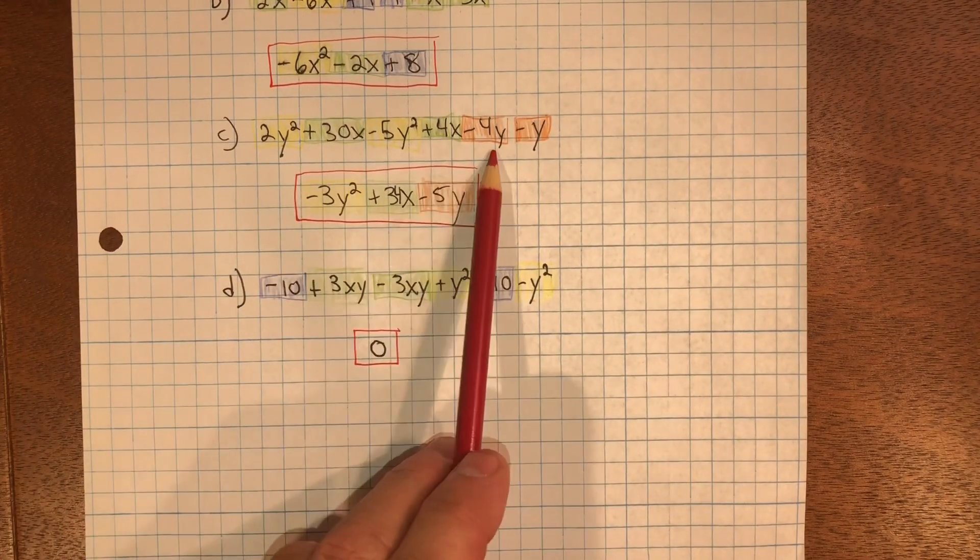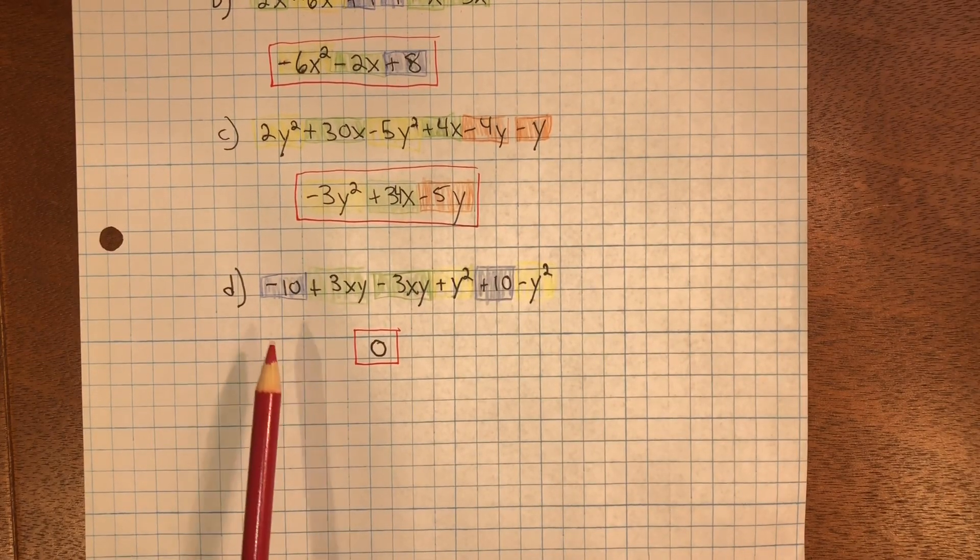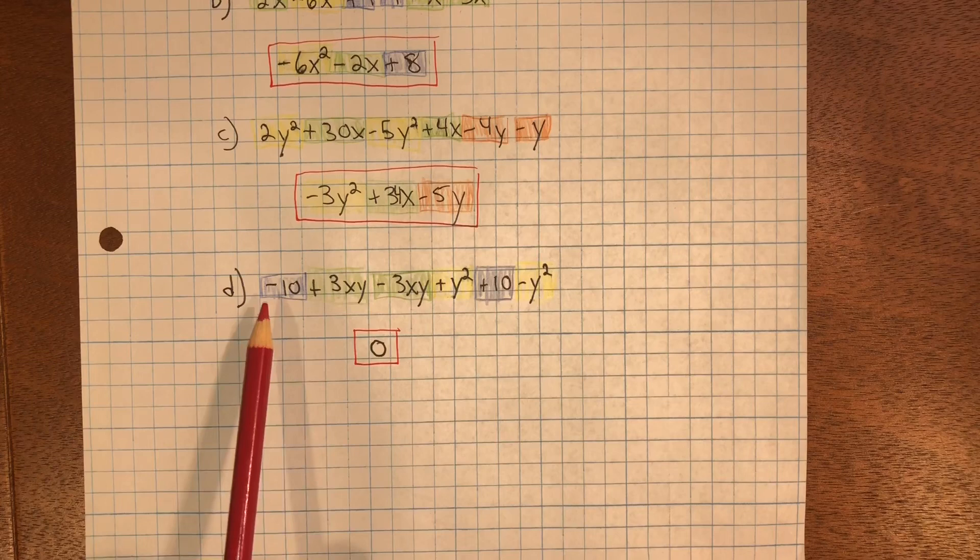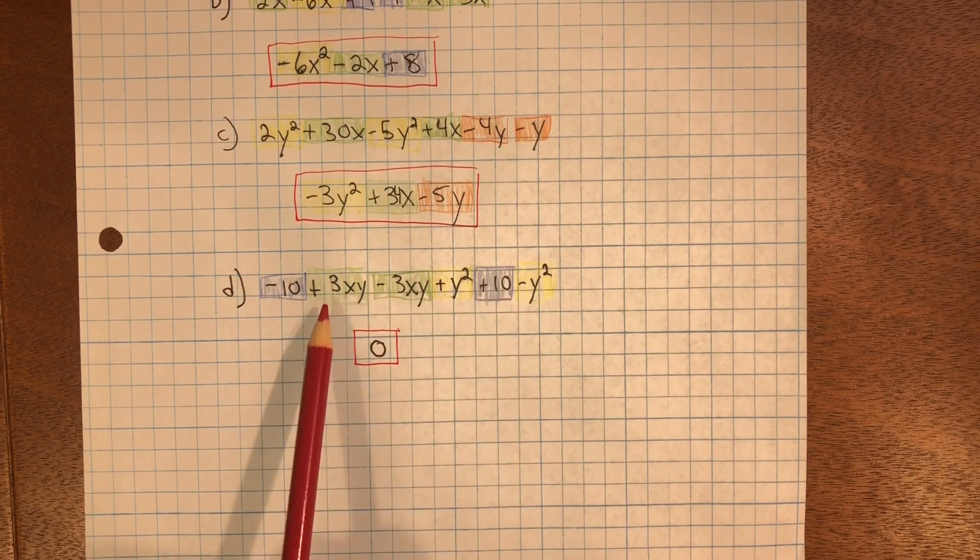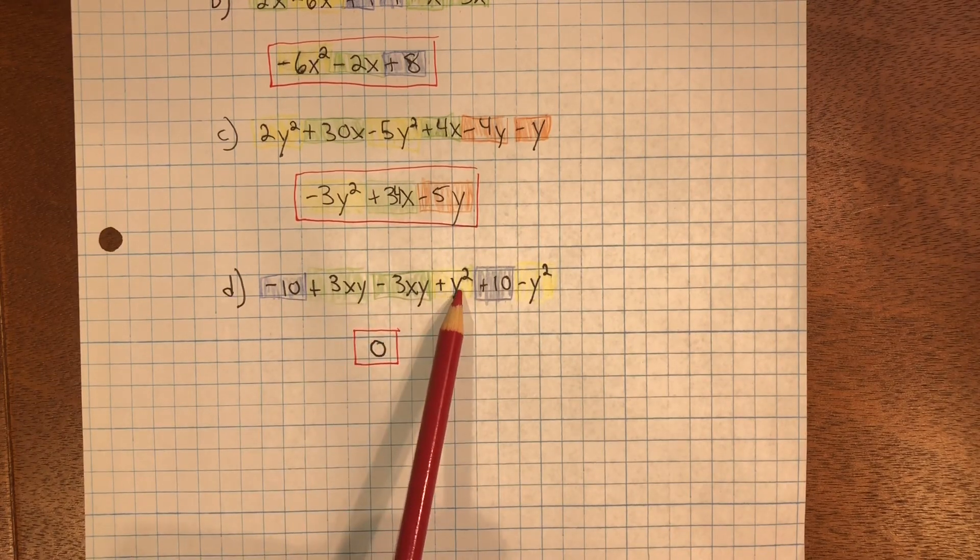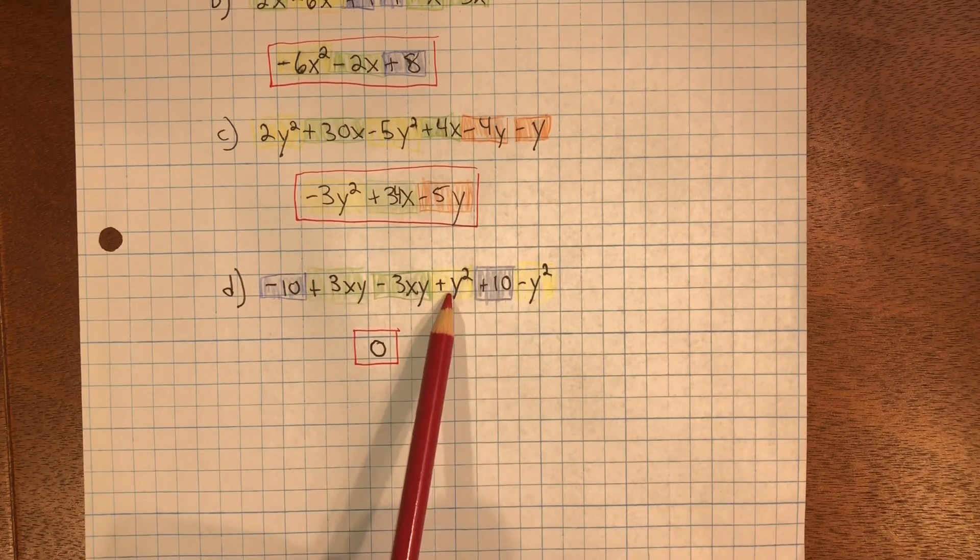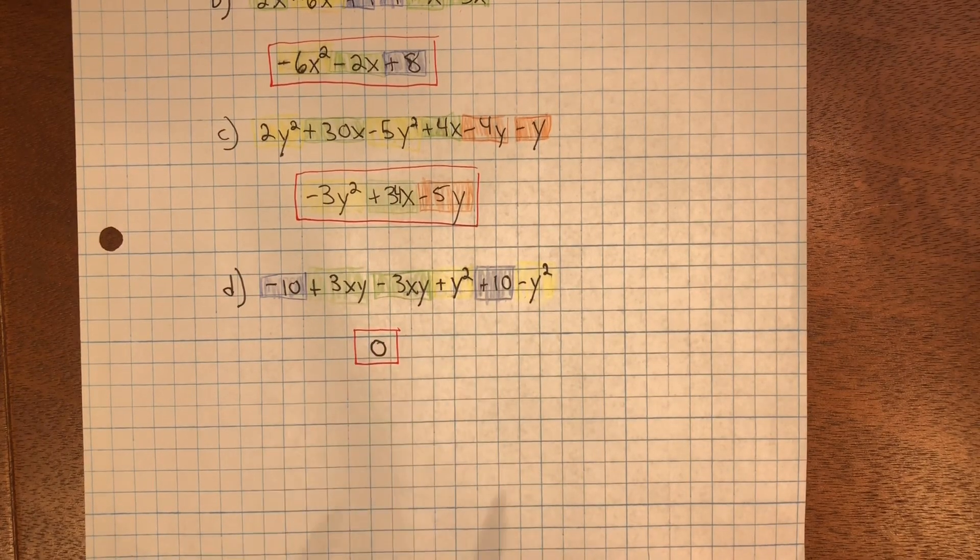In C, I did the same thing. And in D, you can see that we have all zero pairs: negative 10, positive 10; positive 3xy, negative 3xy; positive y squared, negative y squared. So it equals zero.